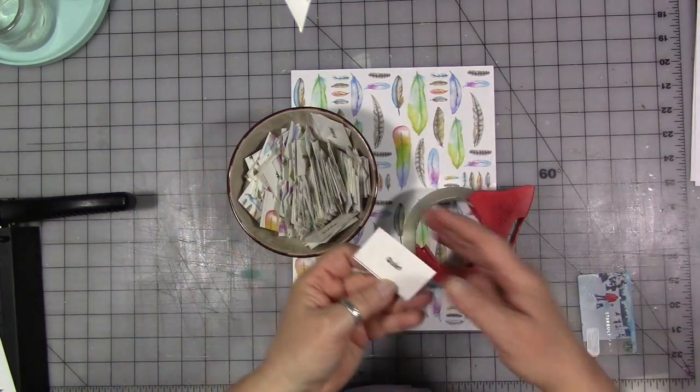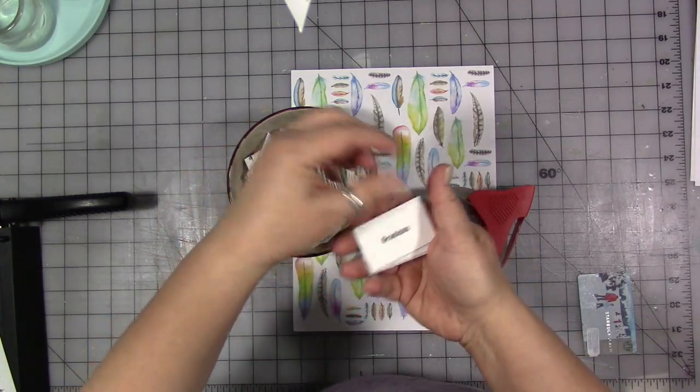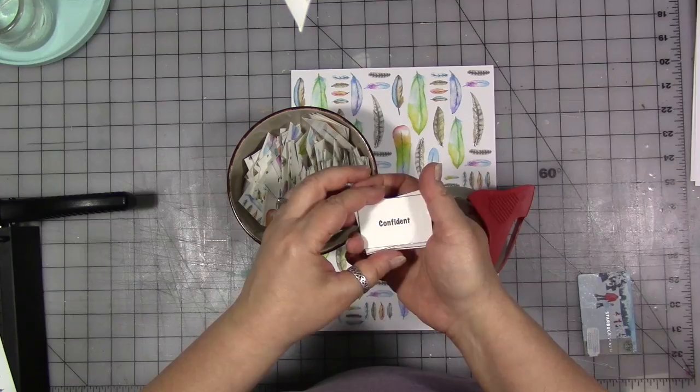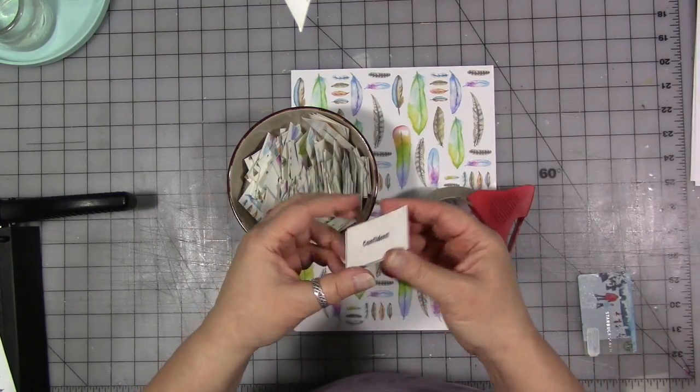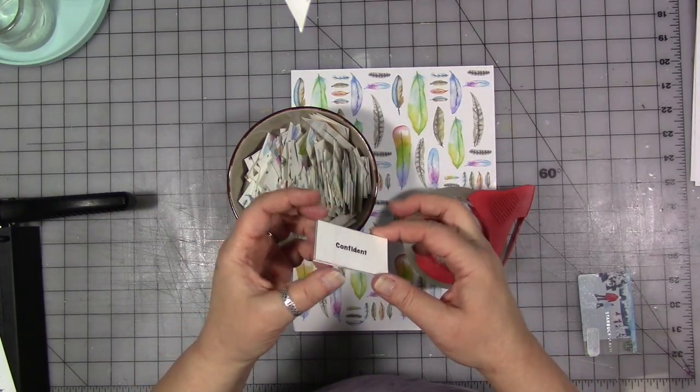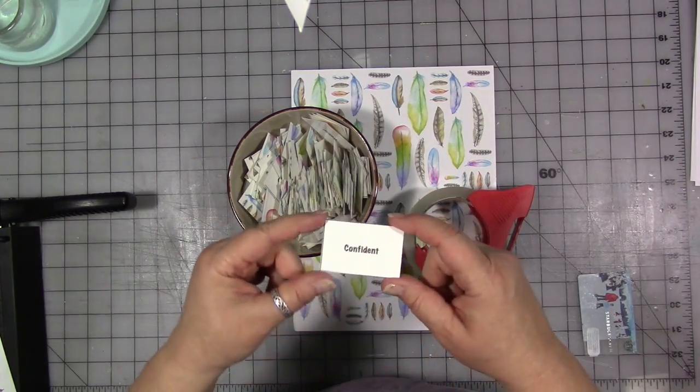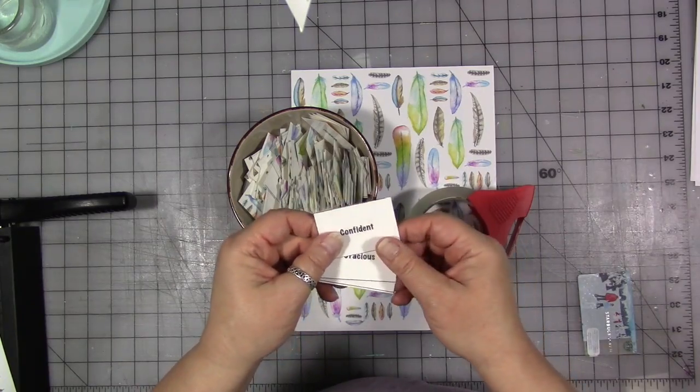They have different positive affirmation words, things that mean something to me. And there's a digital download if you want to make these cards yourself. There's three pages of words and then a sheet for the background, the feather background image. And again, I'll put that in the description below too.